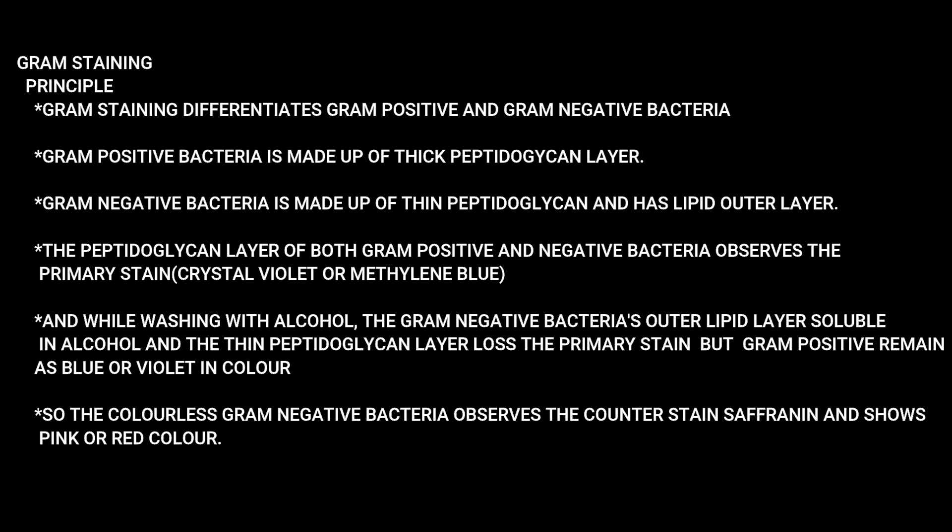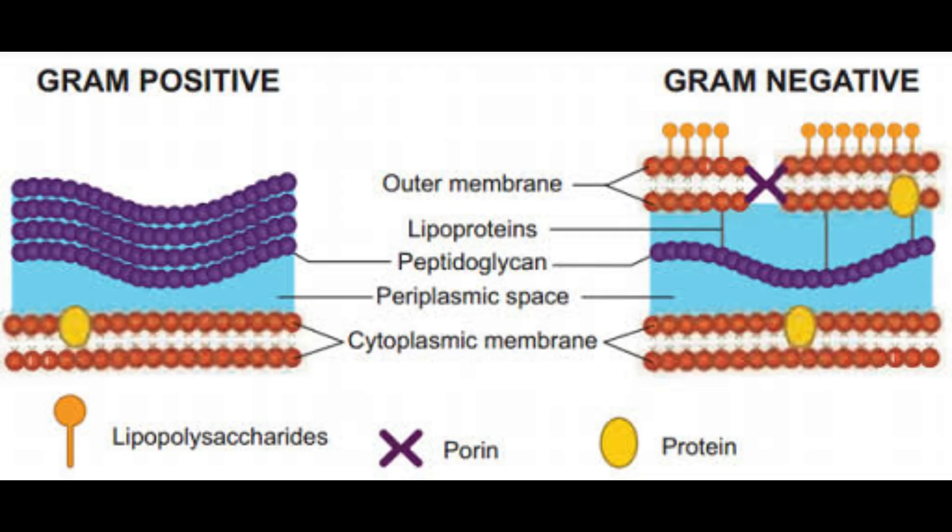Gram staining differentiates gram-positive and gram-negative bacteria. Gram-positive bacteria are made up of a thick peptidoglycan layer. Gram-negative bacteria are made up of a thin peptidoglycan layer and an outer lipid layer.